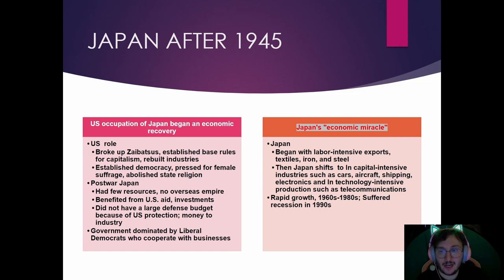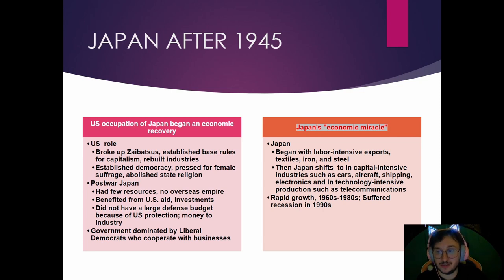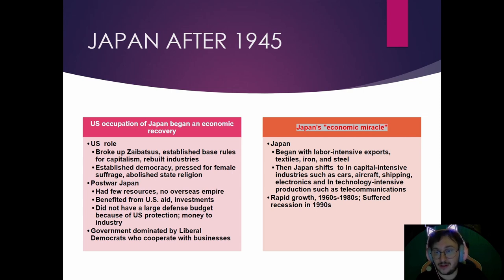The Japanese government was dominated by liberal Democrats who cooperated with business. Similar to before World War II, many businesses were sponsored by the government. Japan had private companies, but the government helped subsidize them — giving them tax breaks, supporting their buildings, and so on.